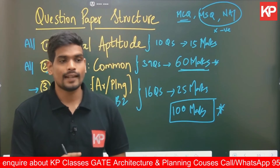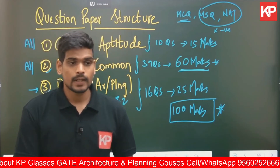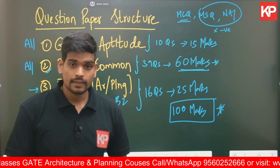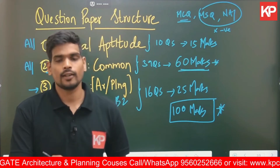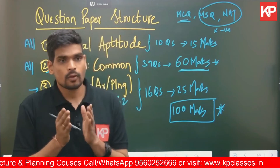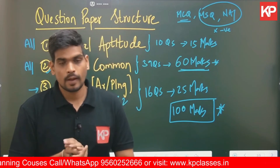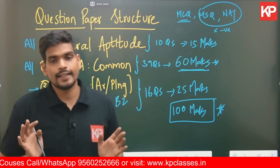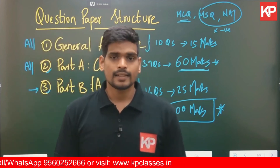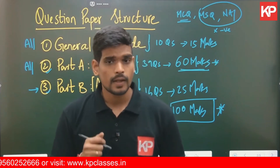To summarize the marks distribution: 60 marks for the common part, 25 marks for Part B (architecture or planning), and 15 marks for General Aptitude — making it a 100-mark examination. For context, in GATE Architecture, top rankers have generally scored around 75 to 80. In GATE 2023 the first ranker scored around 75, and in GATE 2022 around 79.67. Even top rankers rarely score above 90.